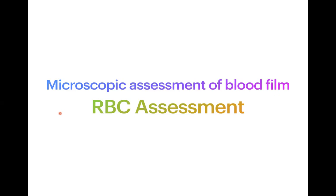In the last session we discussed the common indications for making peripheral blood films, precautions needed to get a proper smear, how to correlate blood smear findings with CBC findings, and the common artifacts encountered. All these things are required before you start the proper assessment of the blood film.